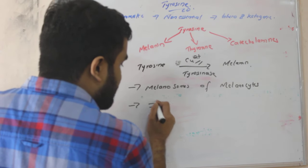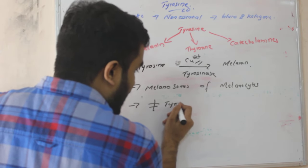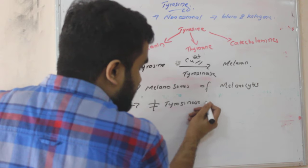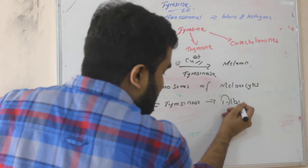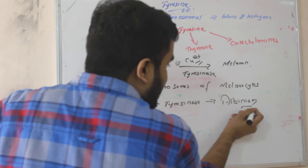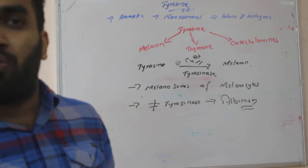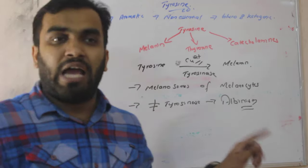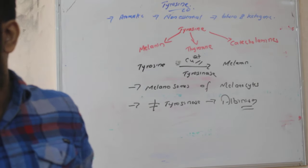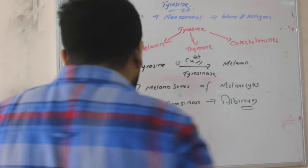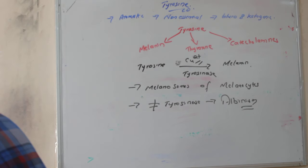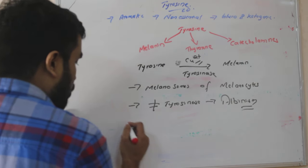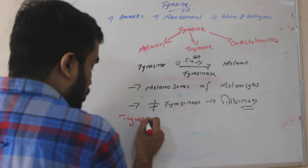If tyrosinase is absent, it leads to a disease known as albinism. That is all part of body will be white. It is not vitiligo - vitiligo is patch of skin will be white. Albinism is different, the whole part of body will be white.